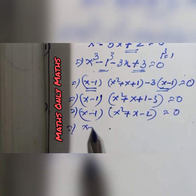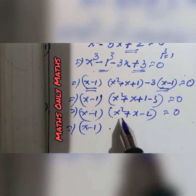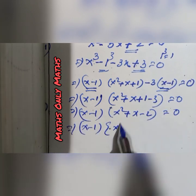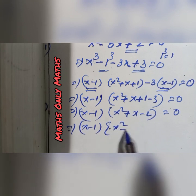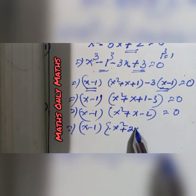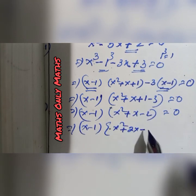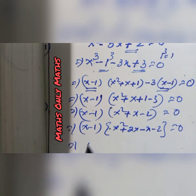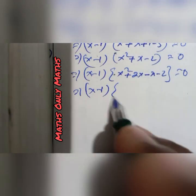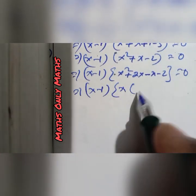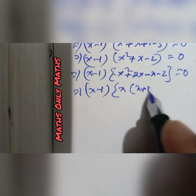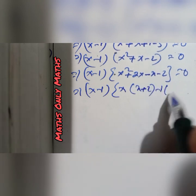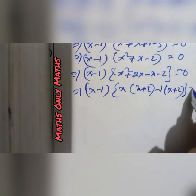Let's factorize x square plus x minus 2. That gives x square plus 2x minus x minus 2, which factors as x minus 1 into x plus 2 minus x plus 2 equals to 0.